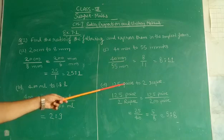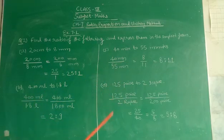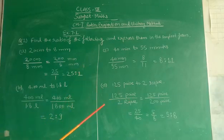Part D is 125 paise to 2 rupees. 125 paise and 2 rupees convert into paise. 1 rupee is equal to 100 paise and 2 rupees is equal to 200 paise.